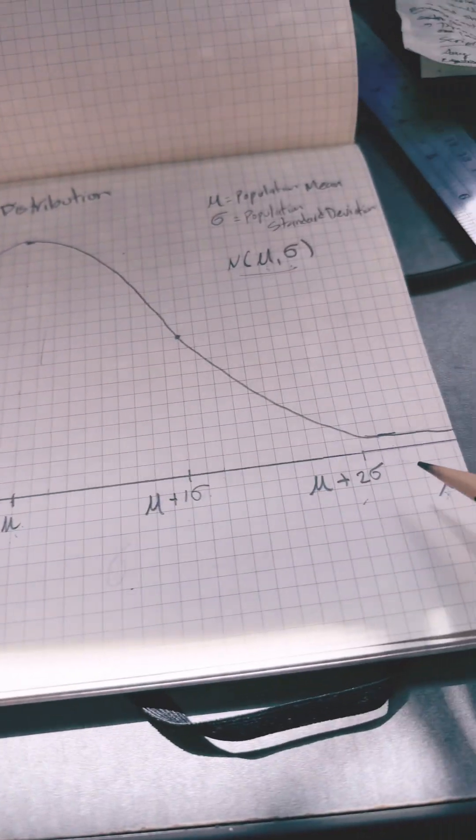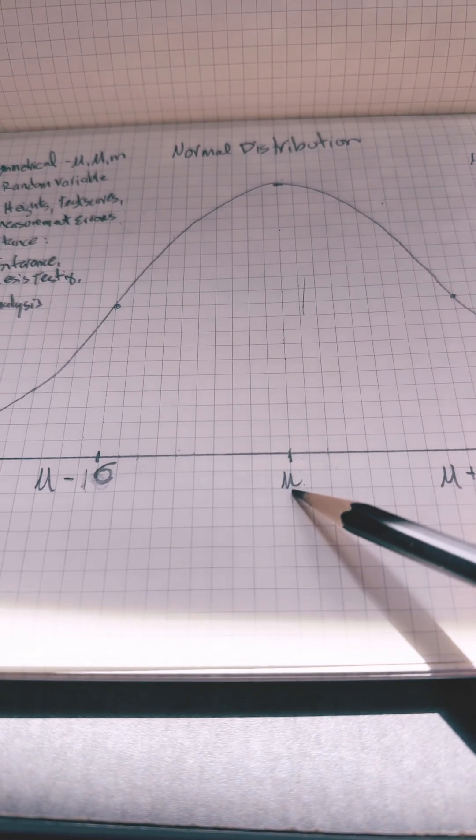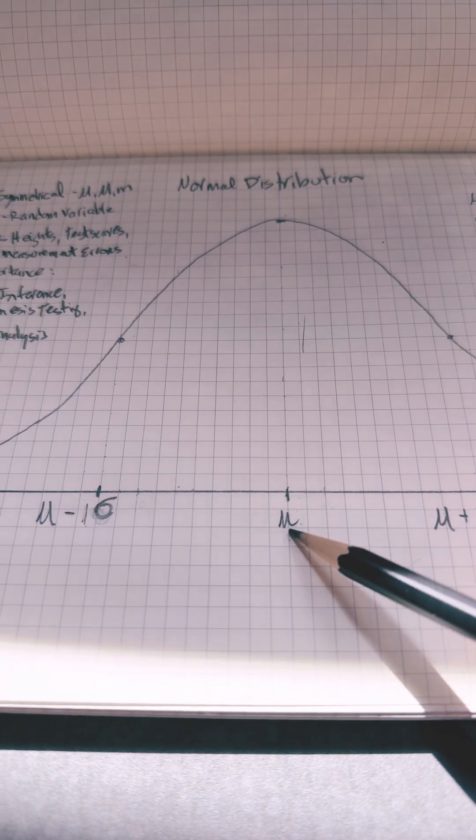The x-axis is represented by a random variable. As you can see, we have the mean in the middle, the population mean.